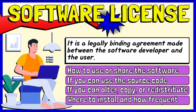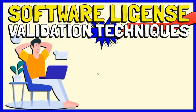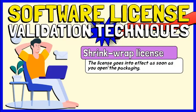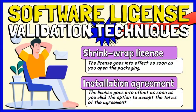Once you purchase the software, or even if you get it for free, you can only use it as defined by the software license. Software publishers typically use two techniques to validate a software license. First is the shrink-wrap license, which goes into effect as soon as you open the packaging. Second is the installation agreement, which is used for downloaded software. Its license goes into effect as soon as you click the option to accept the terms of the agreement.